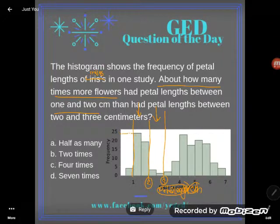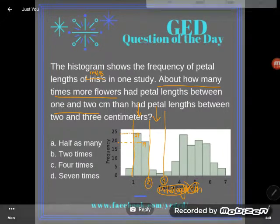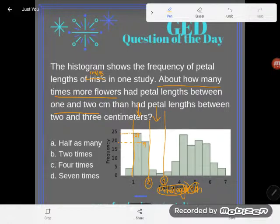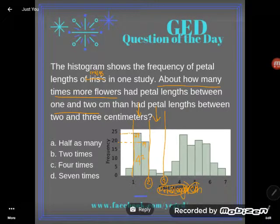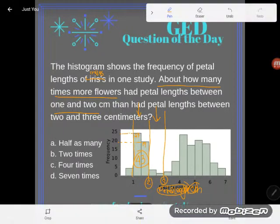Looking at the one-to-two centimeter range, this line here looks like about 24, and this line looks like about 19. So 19 plus 24 is 43 — about 43 flowers in that category.